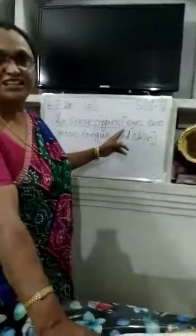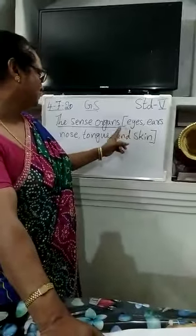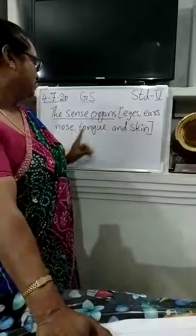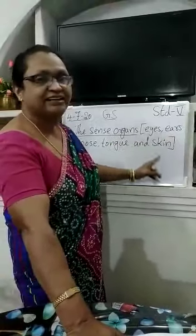You have learned about sense organs. Do you remember? There are five sense organs. Which are the five sense organs? Eyes, ears, nose, tongue, and skin. Why do we call them sense organs? We call them sense organs because they collect information from our surroundings — that means they sense the surroundings.